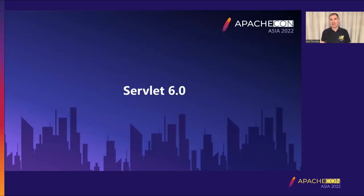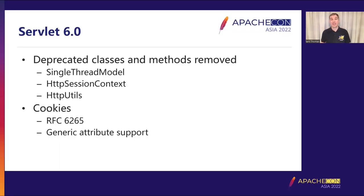Let's look at Servlet 6 and its major changes. An obvious change is that all deprecated classes and methods have been removed — some deprecated for over 20 years, so it shouldn't be a surprise. If you're looking to move to Jakarta EE 10, I strongly recommend fixing all use of deprecated methods and classes first. The single thread model is probably the most notable removal, and any servlets depending on single thread model mode will need to be rewritten.